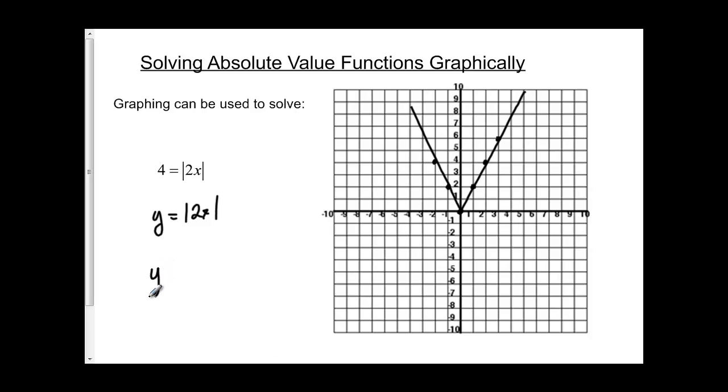The second graph is y equals 4, which is the left-hand side of the equation. Y equals 4 is just a horizontal line going through y equals 4.